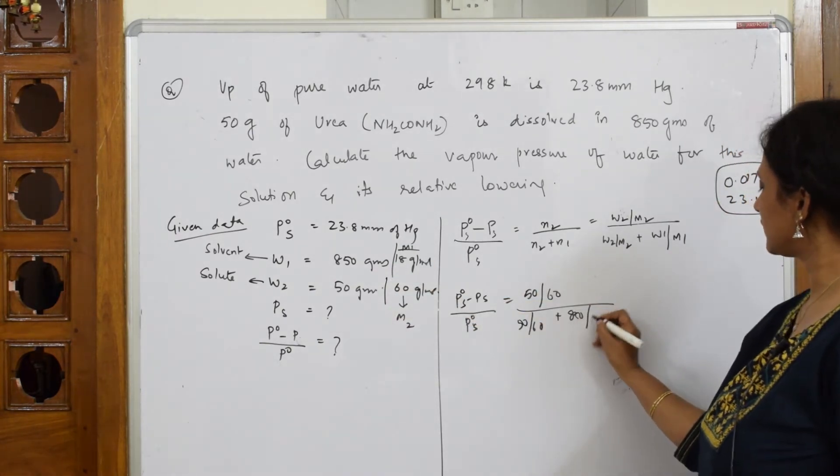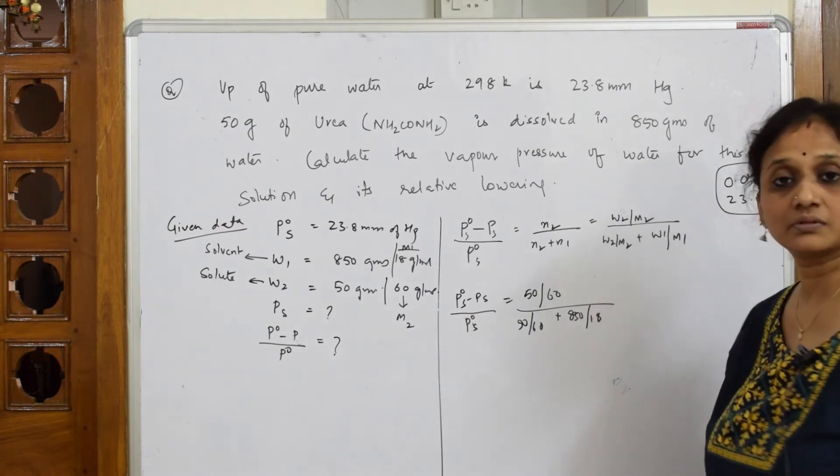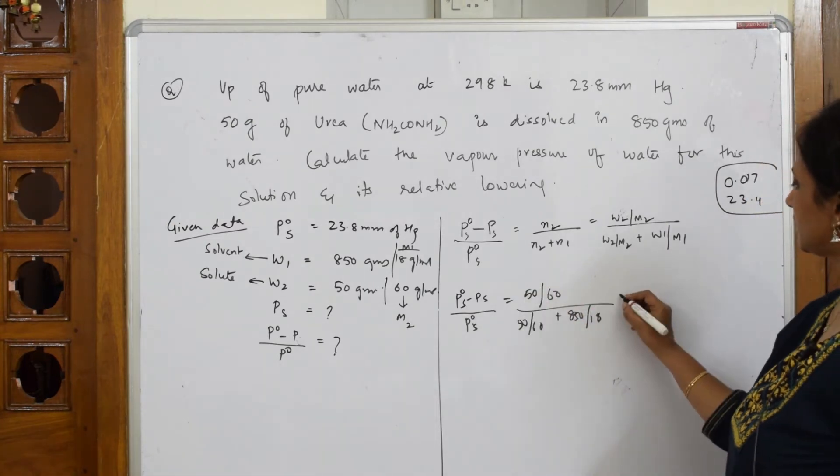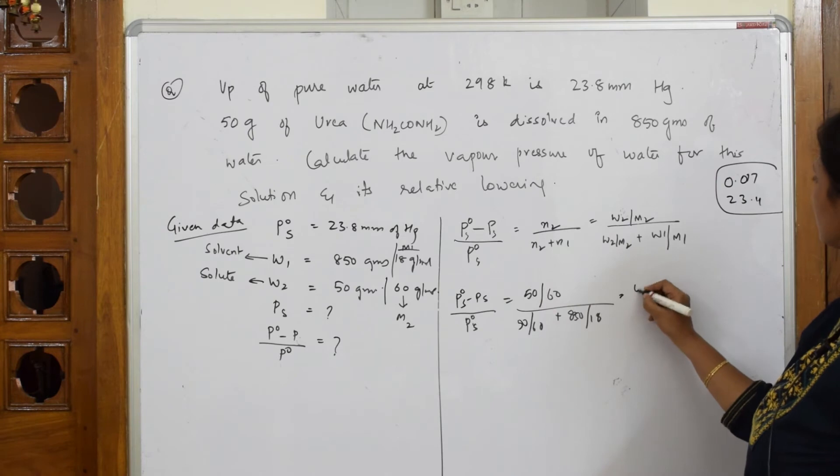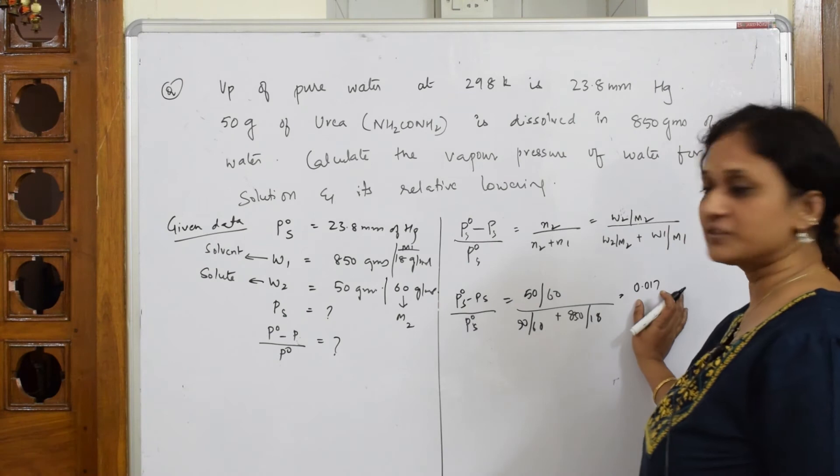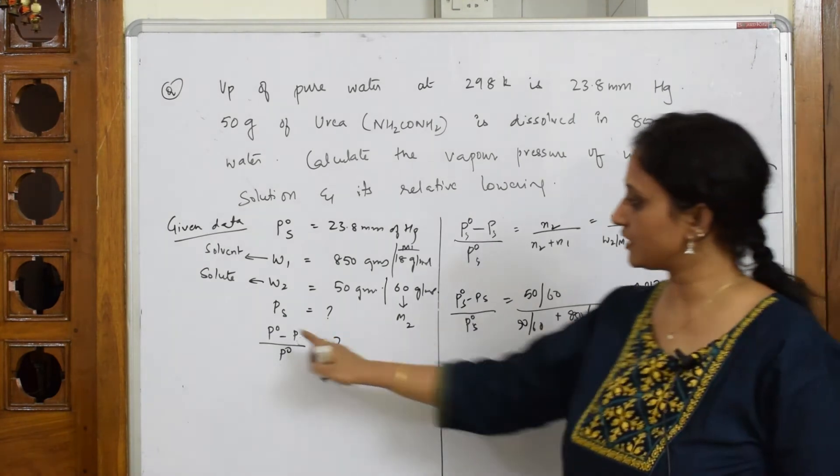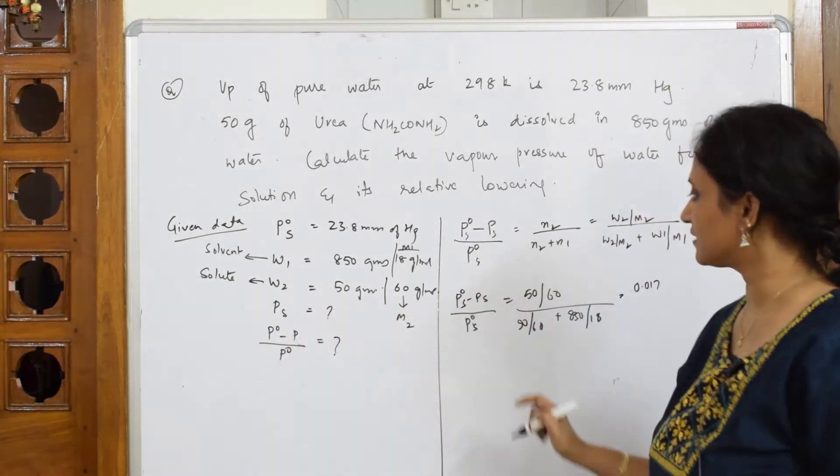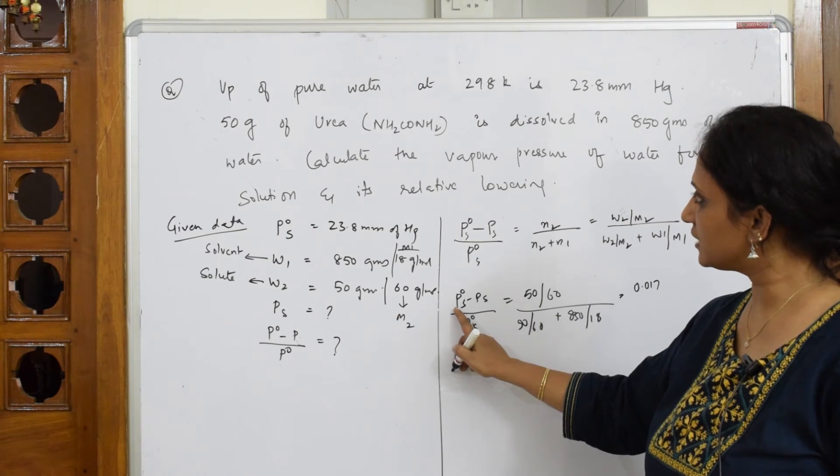Substitute and see: 50 by 60 divided by water weight given is 850 grams divided by 18 grams. When I solve this whole thing, I get an answer - only this thing - I get an answer of 0.017. Now let's come back. This part of the relative lowering I've got, I should also find out PS, isn't it?